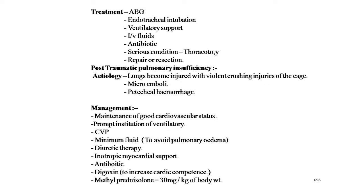Treatment: ABG (arterial blood gases) monitoring, endotracheal intubation, ventilatory support, IV fluids, antibiotics, and — according to serious condition — thoracotomy with repair or resection. Post-traumatic pulmonary insufficiency and acute respiratory failure: in patients who suffer major thoracic trauma, the lungs become injured with violent crushing injuries. Etiology includes microemboli and potential hemorrhage. Management: maintenance of good cardiovascular status, prompt institution of ventilatory support, CVP (central venous pressure) monitoring, minimum fluid to avoid pulmonary edema, diuretic therapy, inotropic myocardial support, antibiotics, digoxin to increase cardiac competence, and methylprednisolone 30 mg/kg body weight.